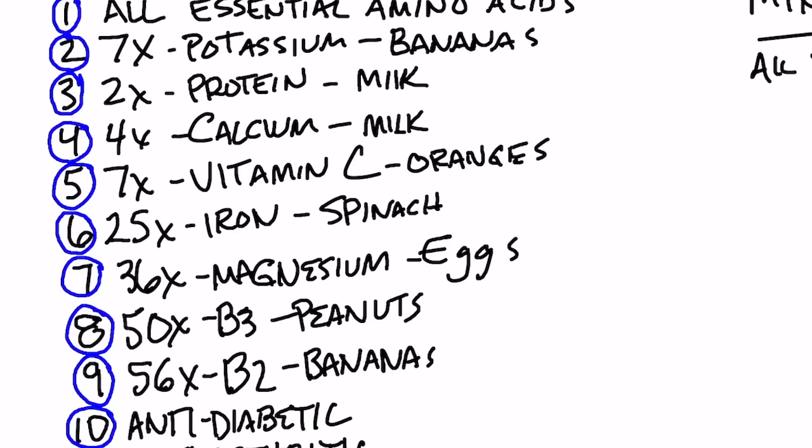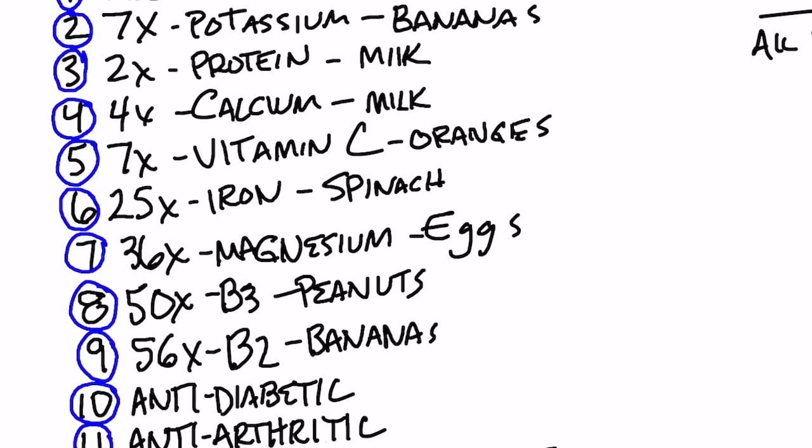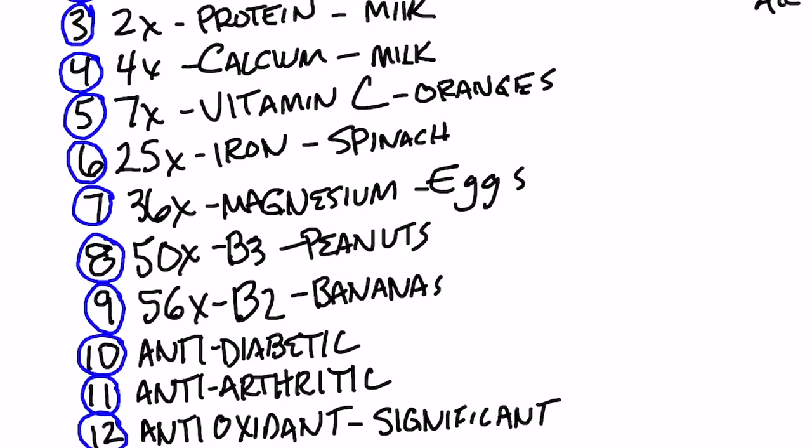Number seven, it has 36 times more magnesium than eggs. And number eight, it has 50 times more vitamin B3 than peanuts. It has 56 times more vitamin B2 than bananas.